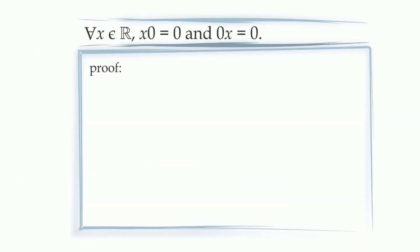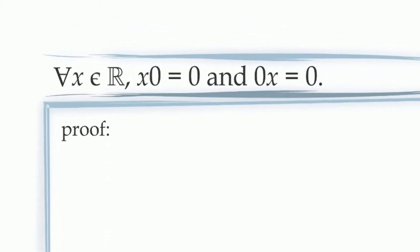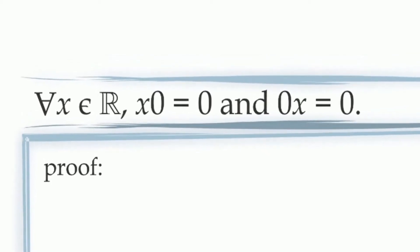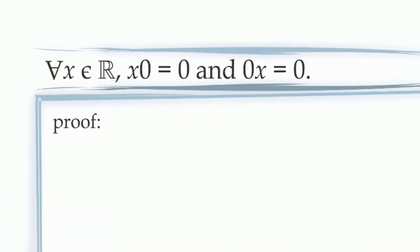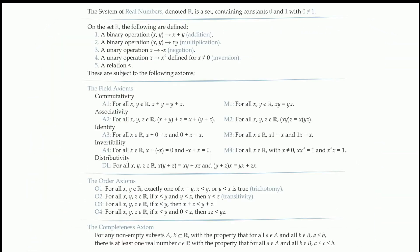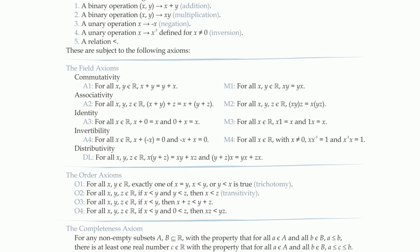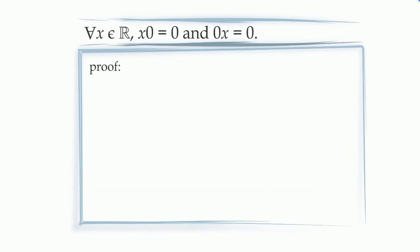To get started, we're going to look at a very simple property of the real numbers: when you multiply any real number by zero, the result is zero. This may sound trivial, but it may end up being a little bit difficult to prove, because since it's our first proposition, all we have is the definition of the real numbers. The only tools available to us are the axioms of the real numbers.